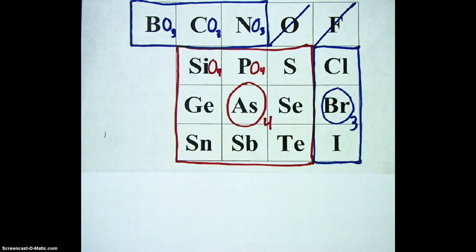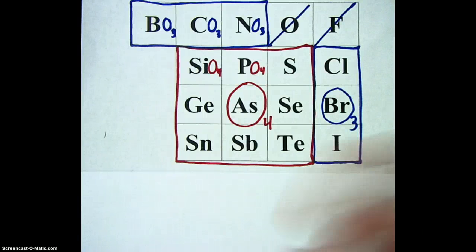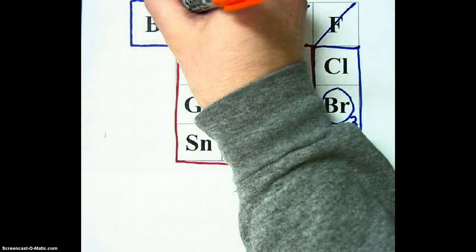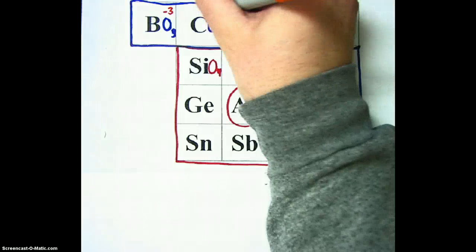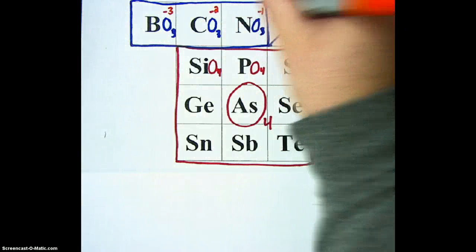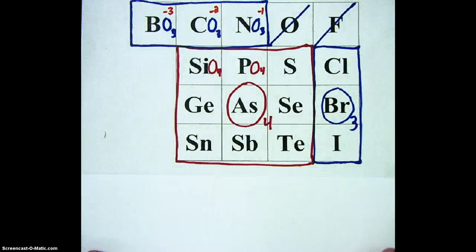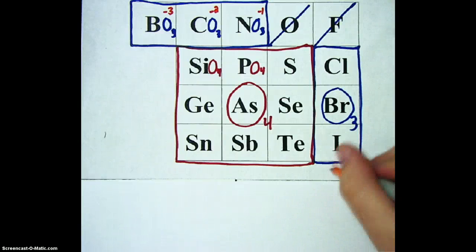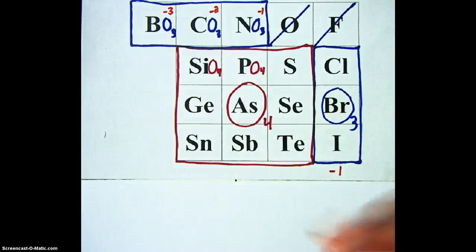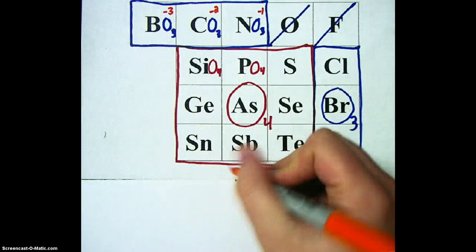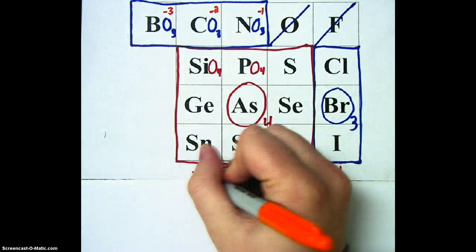We've taken care of the number of oxygens, and now we want to talk about the charges these elements will have in their polyatomic ions. Boron, carbon, and nitrogen are a little special. Boron gets a minus three charge, carbon a minus two charge, and nitrogen a minus one charge — so minus three, minus two, minus one. The rest of the chart follows the normal periodic table pattern: group 17 elements will have a minus one charge, then minus two, minus three, and minus four.